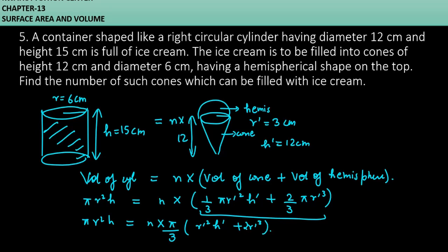We can cancel pi and substitute the values here. So r square here will be 6 square, h is 15, equals n over 3 in bracket, r dash square is 3 square into h dash which is 12, then 2 into r dash cube, so r dash is 3 cube.